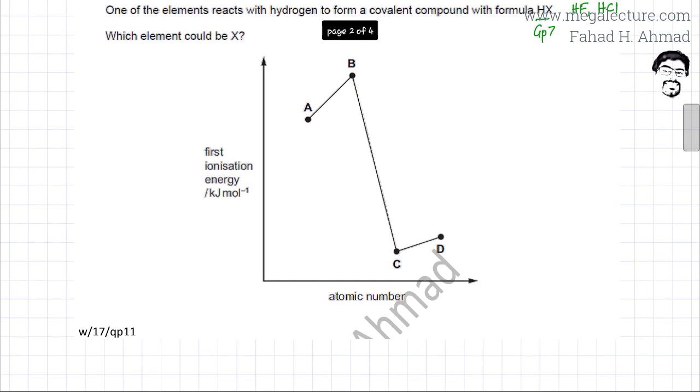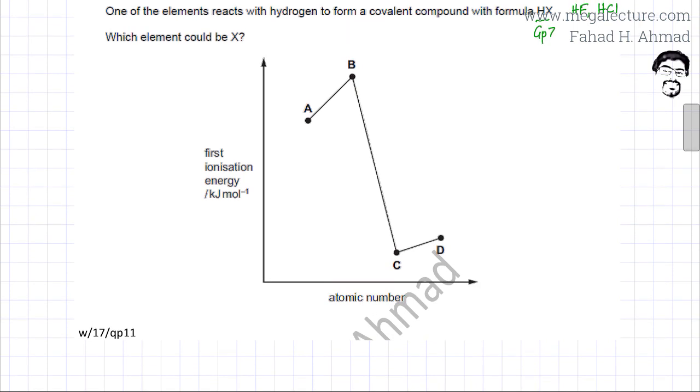We're going to figure out which of these elements with consecutive proton numbers - A, B, C, and D - is from group 7. Remember these are consecutive atomic numbers, elements having consecutive proton numbers. For example, if this is 16, then this is 17, this is 18, and this is 19.